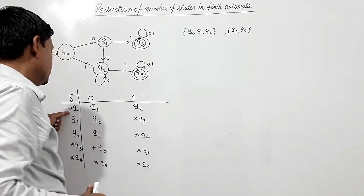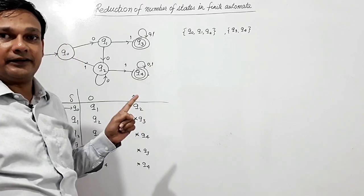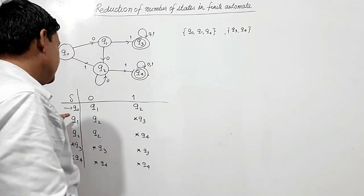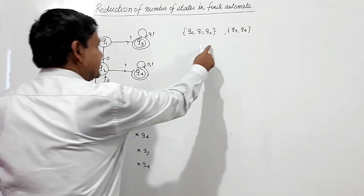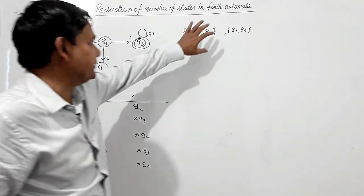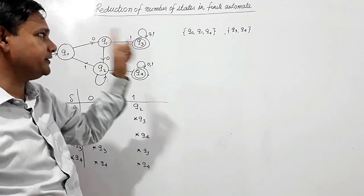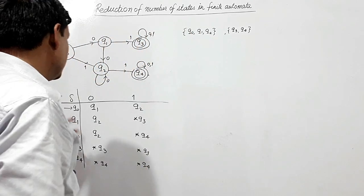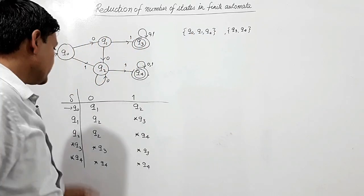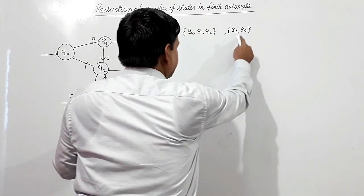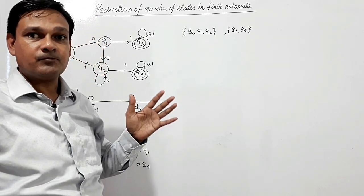We shall check whether the non-final states can be further segregated. Q0, Q1, and Q2 on 0 are all going into this same set. On 1, Q0 goes to Q2 which is in this set, but Q1 on 1 goes to Q3 which is in the final states set. So Q0 and Q1 will be segregated.